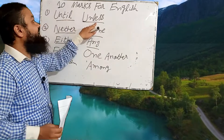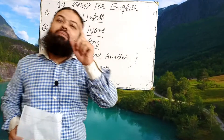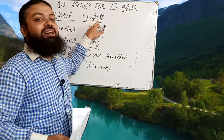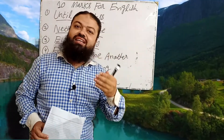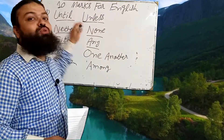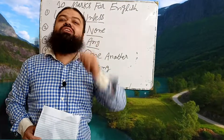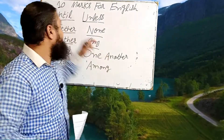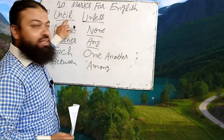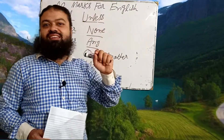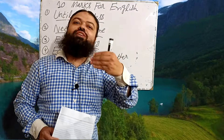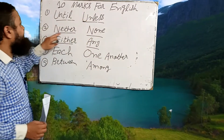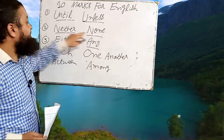Number one is 'until' and 'unless.' Do not apply 'not' after 'until' or 'unless.' For example, if I say 'until you do not come, I will not cut the cake,' it is wrong. The correct one is 'until you come, I will not cut the cake.' After 'until' or 'unless,' you will not apply 'not.'